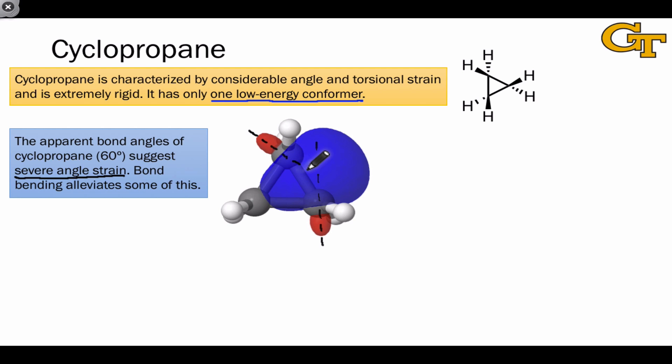Typically, sigma bonds involve the perfect coaxial overlap of orbitals. Here, the orbitals are overlapping at an angle. This provides some energetic advantage since each carbon doesn't really need to achieve a bond angle of 60 degrees.